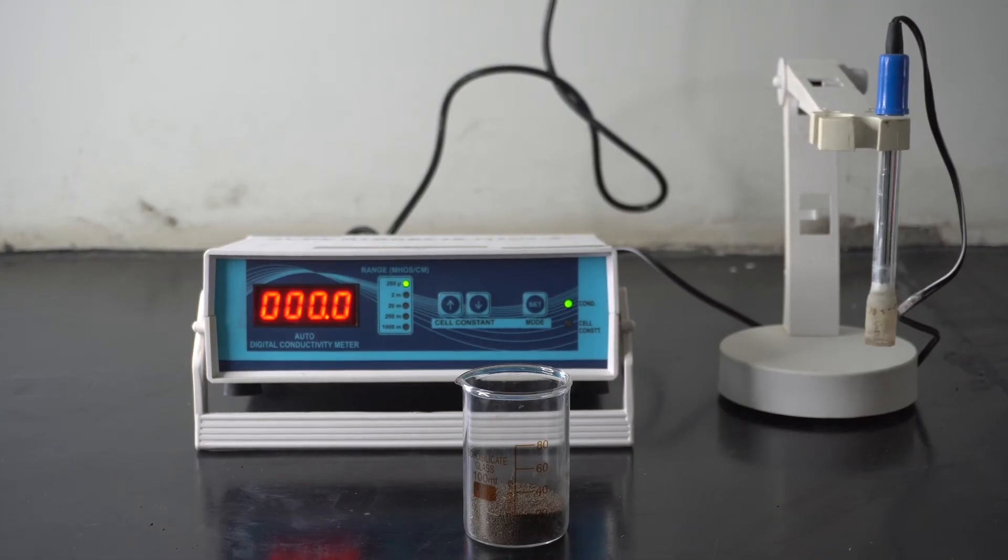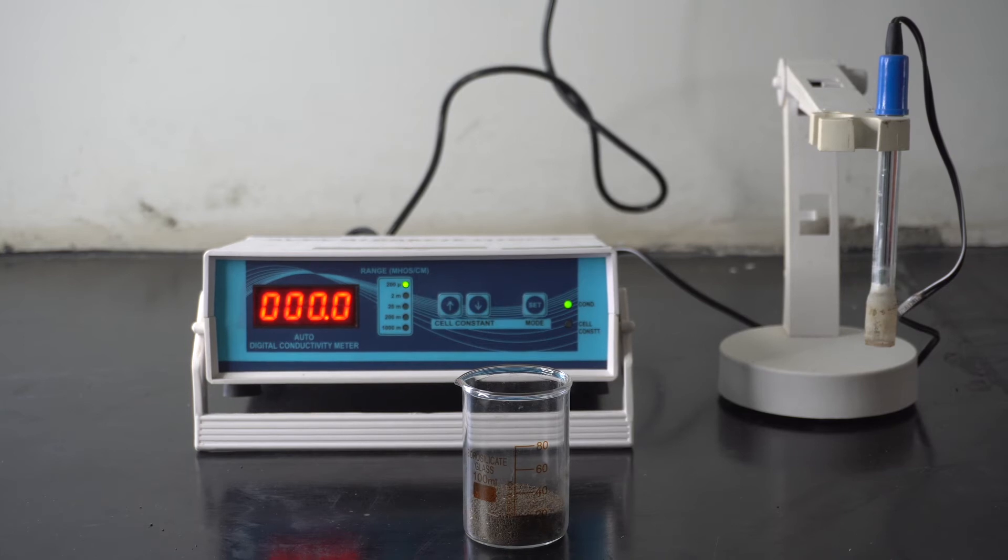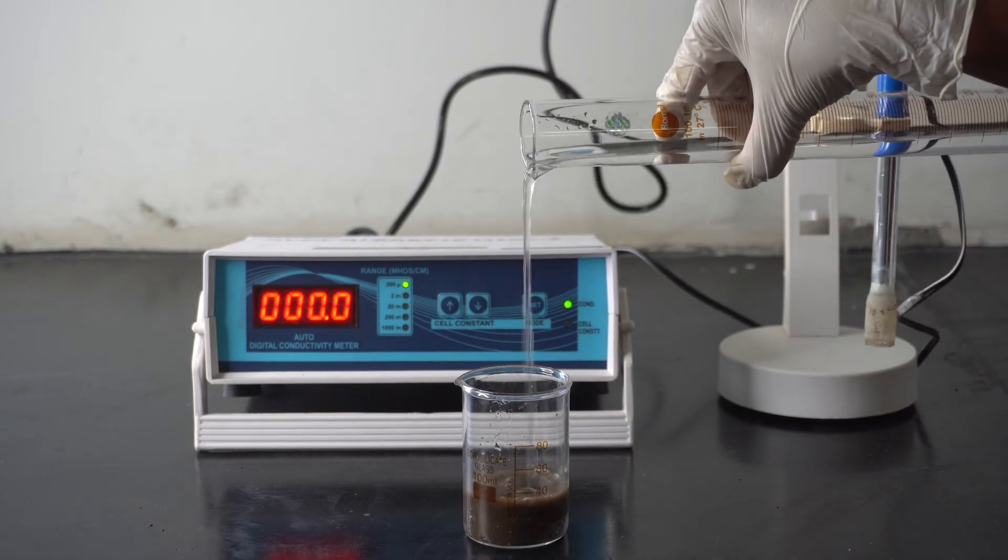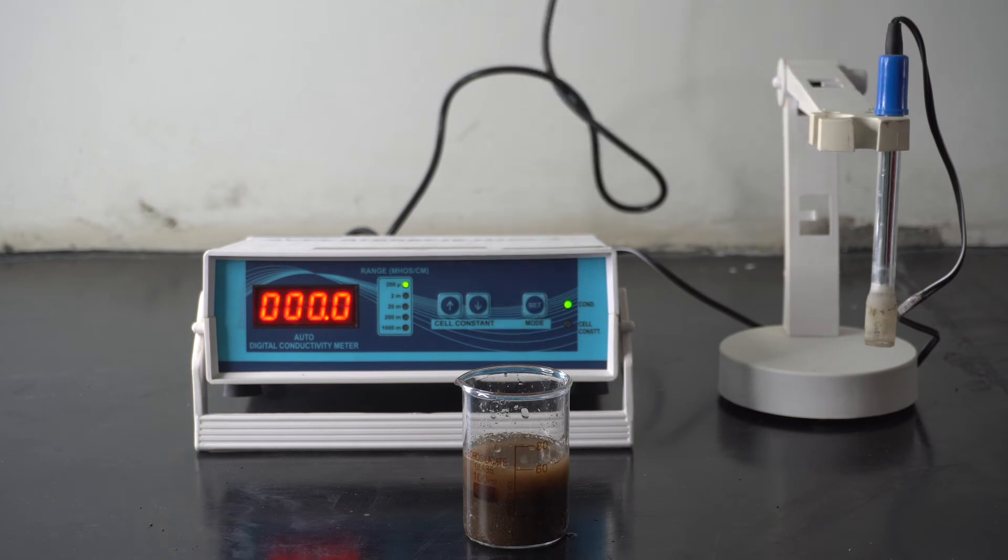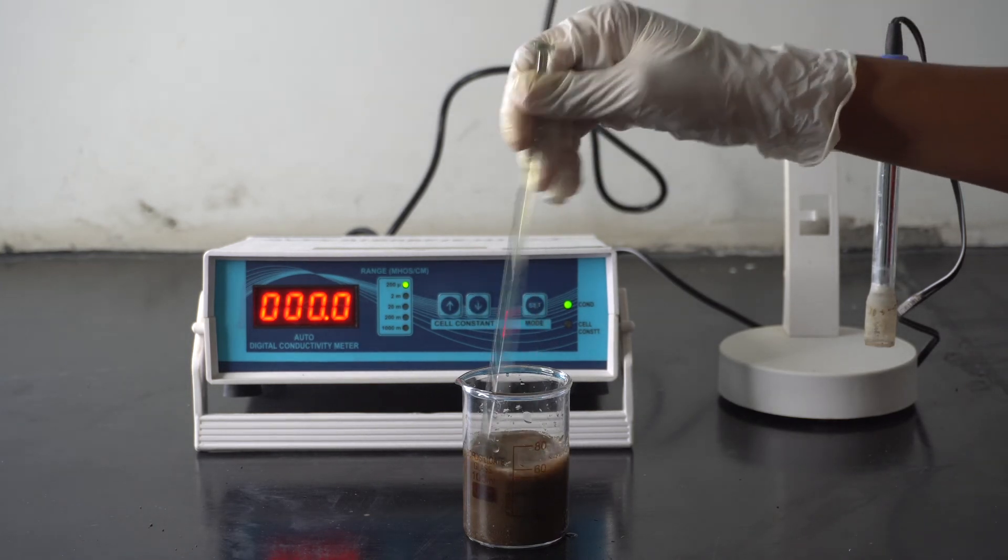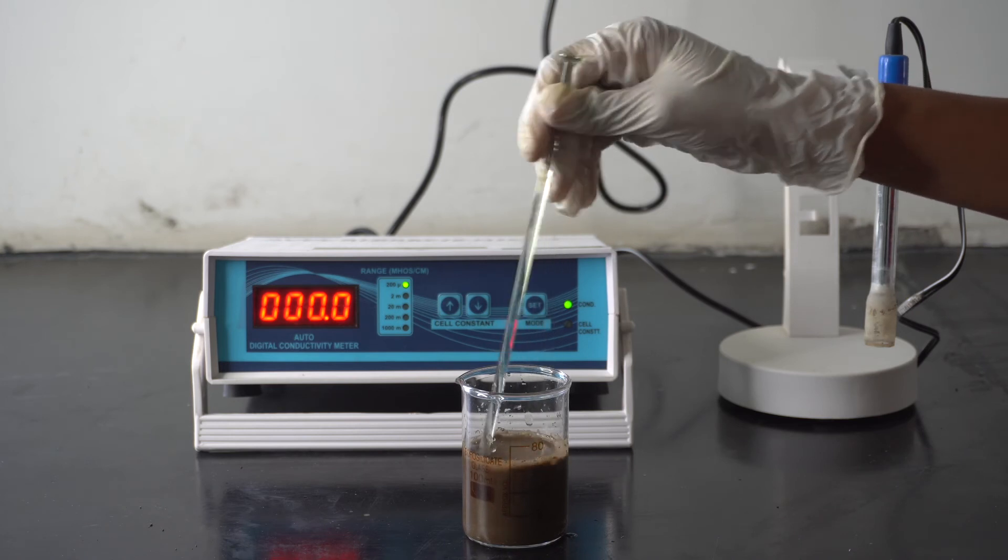Weigh 20g of soil sample and add into a 100ml beaker. Add 50ml of distilled water into the soil sample and stir it with the help of glass rod or stirrer for 30-60 minutes.